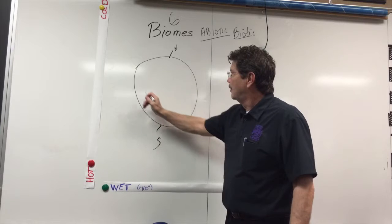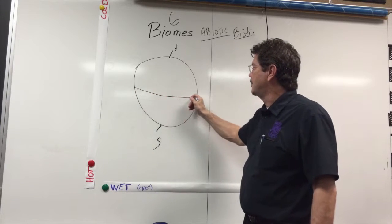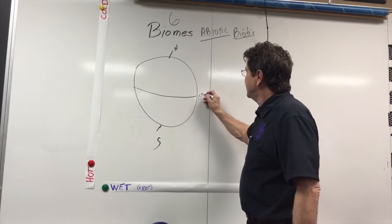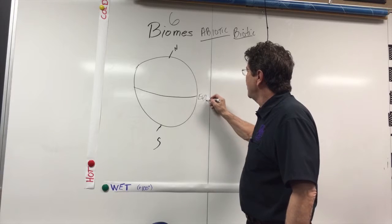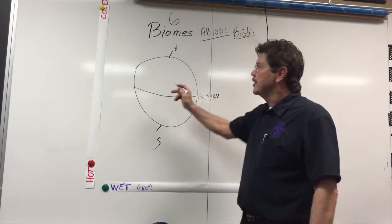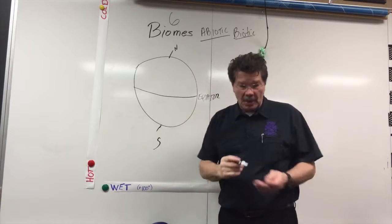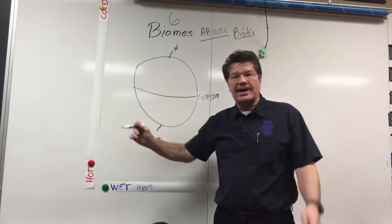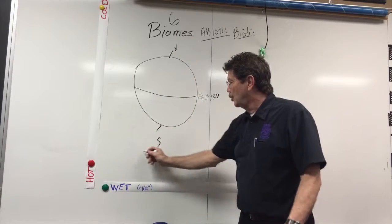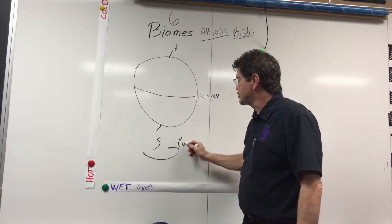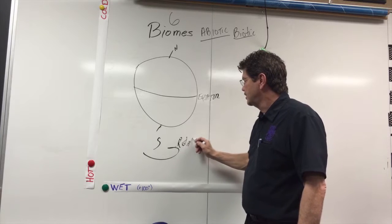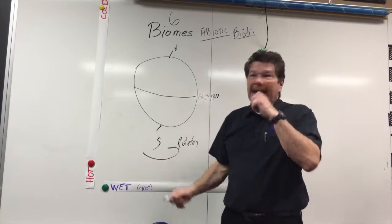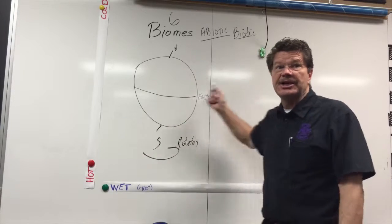It has a north and a south — what would this be? The equator. Now, you might say, why are we starting with this? This is the equator. There's the north pole and the south pole. Our planet rotates on its axis, and it also revolves around the sun. Sometimes the north hemisphere is more directly towards the sun.